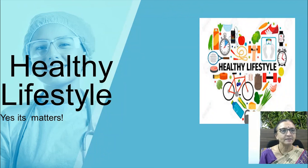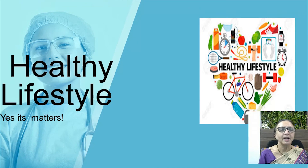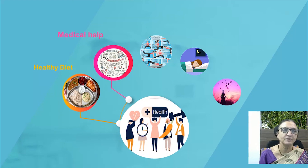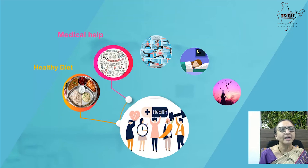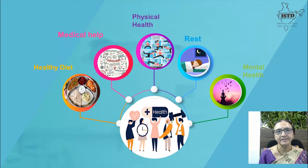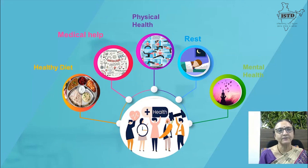Healthy lifestyle matters — it is very important to improve our immunity, which helps us prevent many diseases. A healthy diet is a major factor. Control comorbidities such as diabetes, blood pressure, and obesity. Do regular exercise to maintain physical health. Eight hours of sleep is very important for a healthy life. Mental health is equally important as physical health and can be maintained by doing yoga and meditation. By all these means we can keep our life healthy.